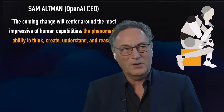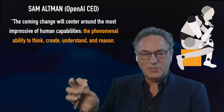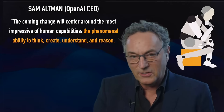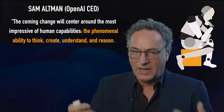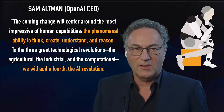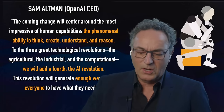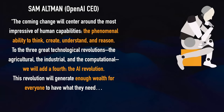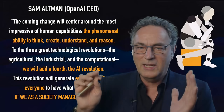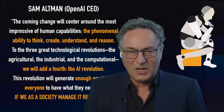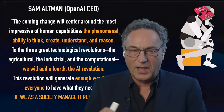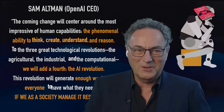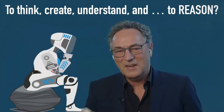Sam Altman, the CEO of OpenAI — which just got 10 billion from Microsoft — says: 'The coming change will center around the most impressive human capabilities: the phenomenal ability to think, create, understand, and to reason.' He talks about the great AI revolution creating enough wealth for everyone to have what they need, provided we can manage it responsibly. I kind of doubt technology companies would manage that part responsibly — regulation is probably the next thing that's going to happen here.